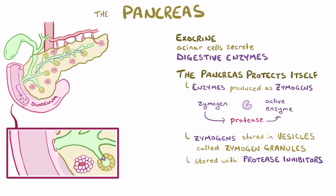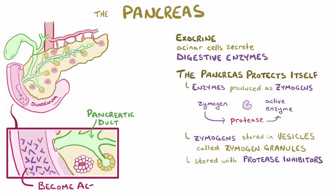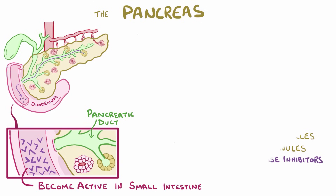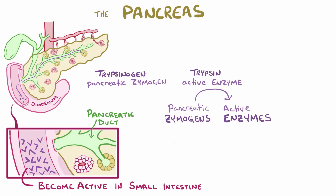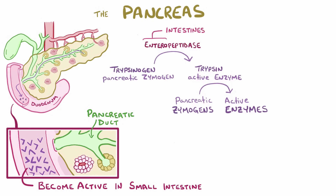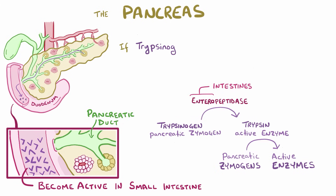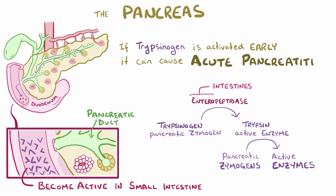To digest a meal, these zymogens are released into the pancreatic duct and delivered to the small intestine where they're activated by the protease trypsin. Trypsin is a pancreatic digestive enzyme that's produced as the zymogen trypsinogen. Normally, trypsinogen isn't activated until it's cleaved by protease enteropeptidase, which is found in the duodenum. But if trypsinogen and these zymogens become activated too early, then it can cause acute pancreatitis.